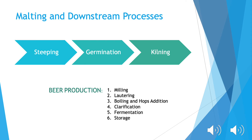A malting process begins with steeping, which involves soaking the grains in water for two to three days to increase moisture content and begin germination. Germination is a four-day process that allows for the grain to sprout and cell walls to break down. Kilning is the final step in malting. This step stops the germination process and gives the malt its flavor and color. This process causes the breakdown of endosperm cell walls, which releases starches that are necessary for brewing.